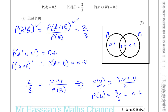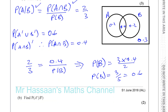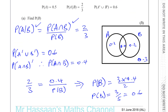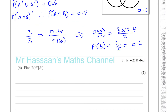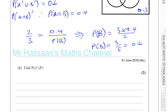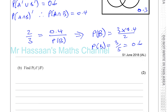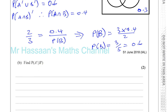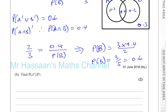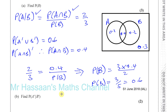Now it says find the probability of A complement given B complement. Looking at the Venn diagram, this means we're limiting our sample space to everything outside of B — that's B complement. We're only considering what's outside of B, and within that, we want what's also outside of A. So what's outside of A and also outside of B is the 0.3 region.